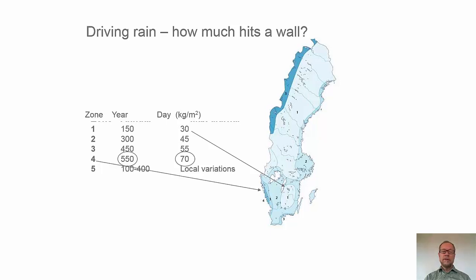So, let's say we have a wall with the area of 100 square meters, up to 7,000 liters, or 7 tons of water can hit a wall of that size in a very severe driving rain day. So, this has to be accounted for.